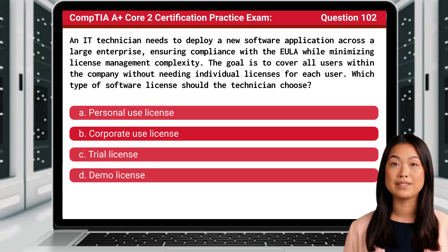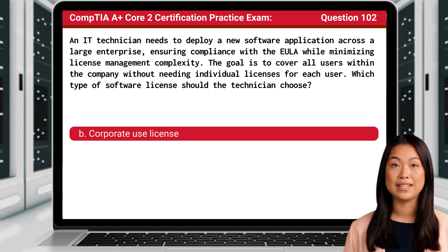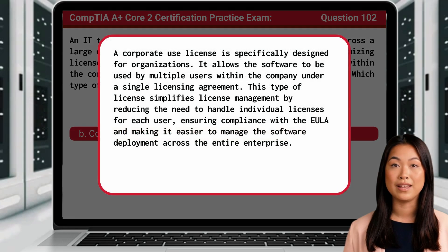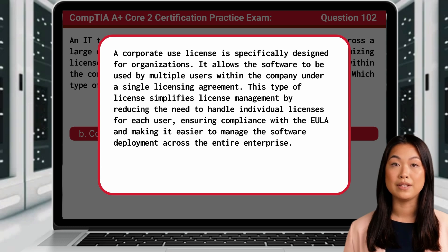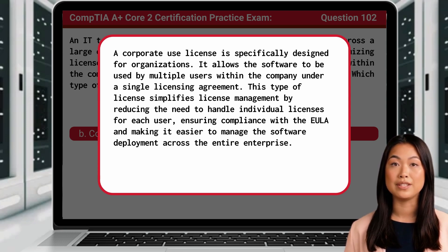The answer is B: Corporate Use License. A corporate use license is specifically designed for organizations. It allows the software to be used by multiple users within the company under a single licensing agreement. This type of license simplifies license management by reducing the need to handle individual licenses for each user, ensuring compliance and making it easier to manage software deployment across the entire enterprise.